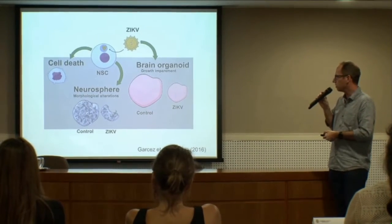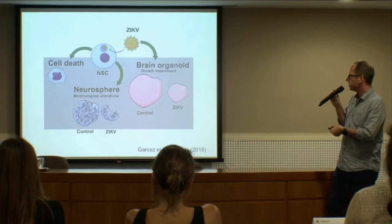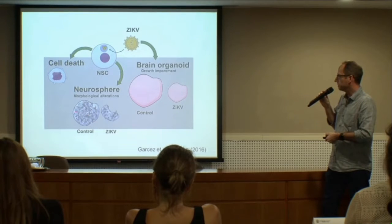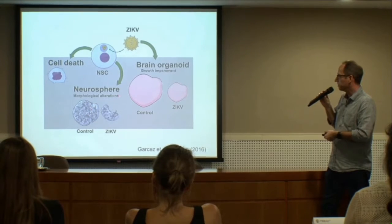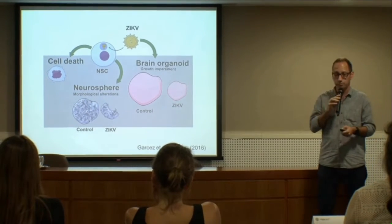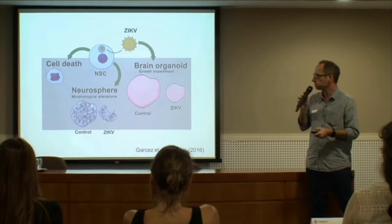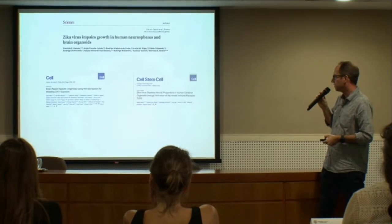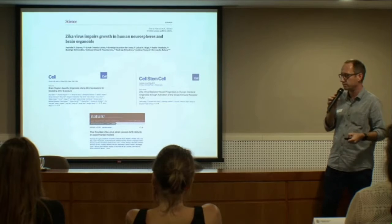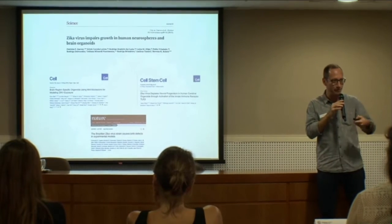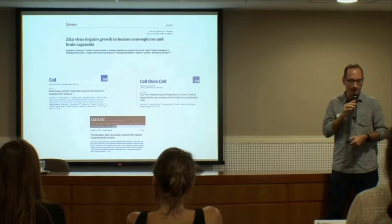So we proposed a model in which neural stem cells are infected by the Zika virus, they die, they disrupt the formation of neural spheres, and they impair the growth of brain organoids. This paper was published and then confirmed by other authors, which is of course very important nowadays given the challenge of replicating data.